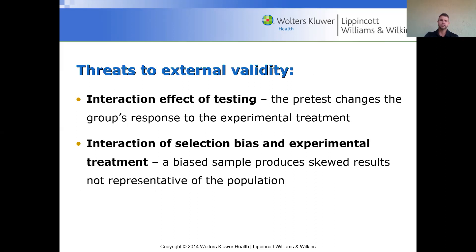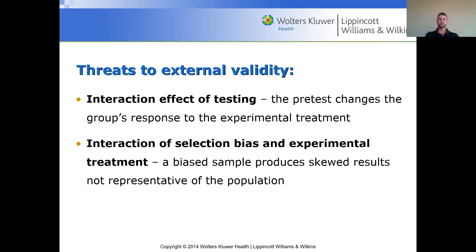Threats to external validity include the interaction effect of testing, where the pretest changes the group's response to the experimental treatment — participants start figuring things out as testing proceeds. Selection bias with experimental treatment produces biased samples that don't represent the population. For example, in a weight loss study, if you put all the obese participants in diet A and the lean, athletic participants in diet B, diet A will show much more change — that's selection bias.